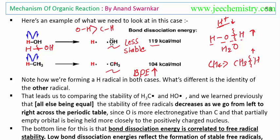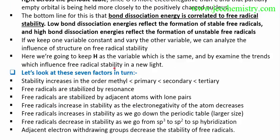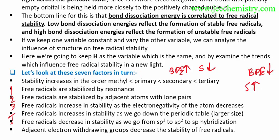There are lots of factors which will increase or decrease free radical stability. We should think about all factors in terms of bond dissociation energy: if bond dissociation energy increases, stability decreases; if bond dissociation energy decreases, stability increases. We will learn seven factors accordingly.